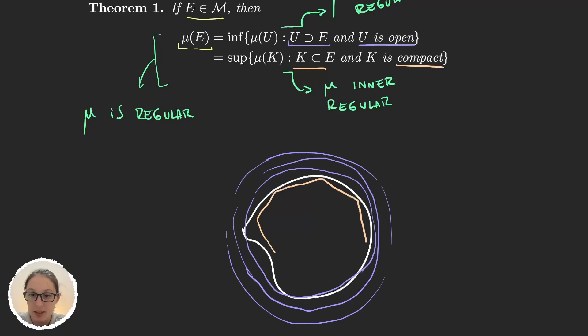I'm just drawing anything in here that kind of looks like a compact set. And approximate my function with these type of sets.